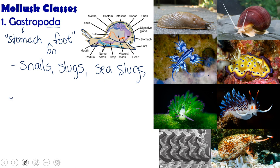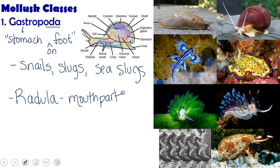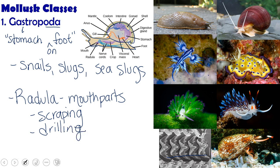Another key feature of gastropods is the radula, which is basically the mouth parts of the snail. Many snails have mouth parts made for scraping — like the snails you see on the side of an aquarium scraping off algae. This is what their radula looks like under a scanning electron microscope. Sometimes the radula is used for drilling; moon snails in particular drill holes into other mollusks and then eat them. They can also be used for harpooning — I encourage you to watch the cone snail video on our Verge Biology page, because it is amazing how lethal these tiny snails can be.